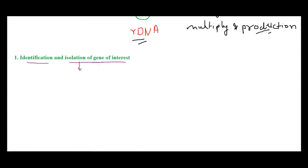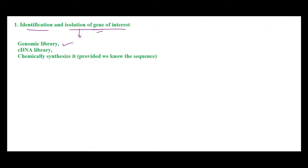The sources from which we can obtain the gene of interest include a genomic library, which contains all different genes; a cDNA library, that is a complementary DNA library; or you can chemically synthesize the DNA you're looking for — provided we know the sequence of that particular gene, it is possible to chemically synthesize it.